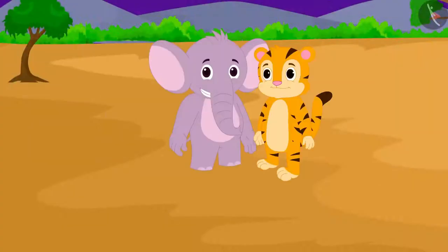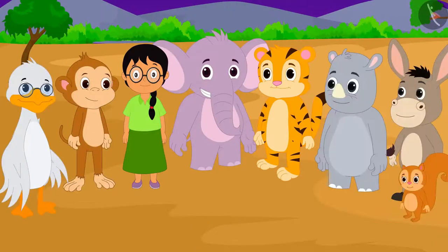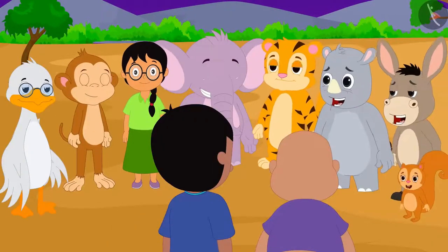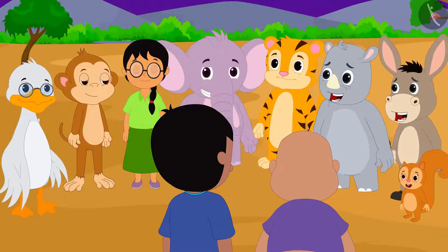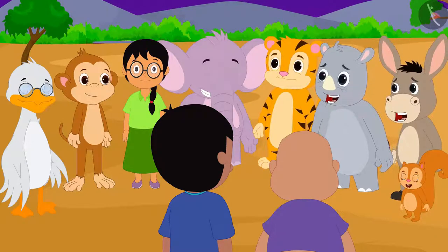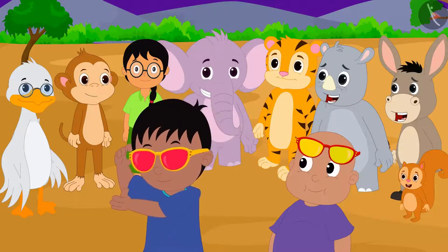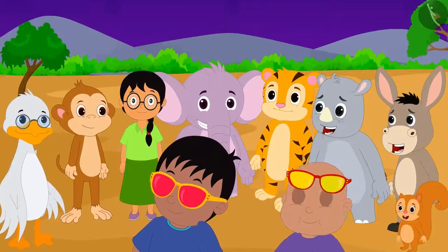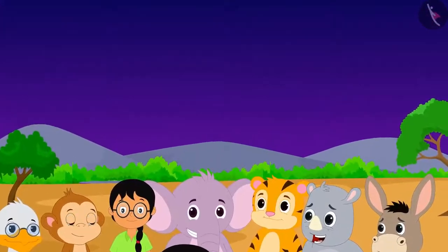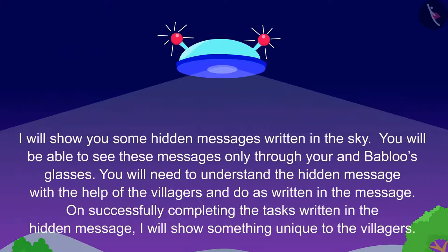Raju and Bablu gathered all the villagers in the playground as per Jeev's letter. Raju put on his glasses and looked in the sky towards Jeev's flying saucer.